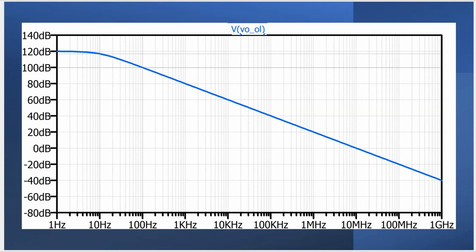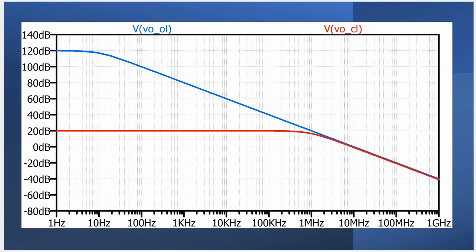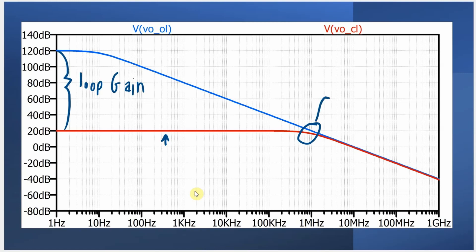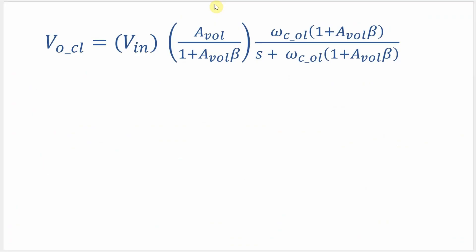In the frequency domain, if the open-loop frequency response looks like this, then the closed-loop frequency response looks like this. The blue line is the open-loop gain; the red line is the closed-loop gain. Notice how the closed-loop gain meets the open-loop gain at the corner frequency of the closed-loop gain, and from that point on the two circuits have the same frequency response. This difference in gain is called the loop gain. That corner frequency is ωC of the open-loop response times (1 + AOL·β). The big takeaway: the gain has been decreased by the factor (1 + AOL·β), but the cutoff frequency has been increased by that same factor.